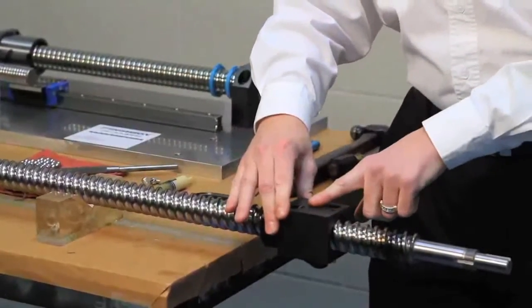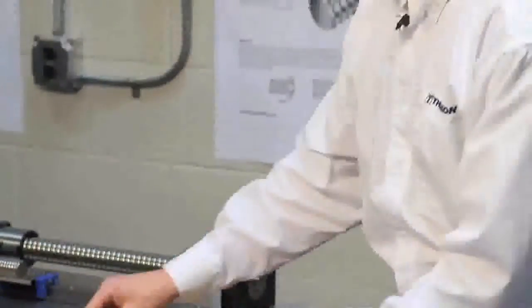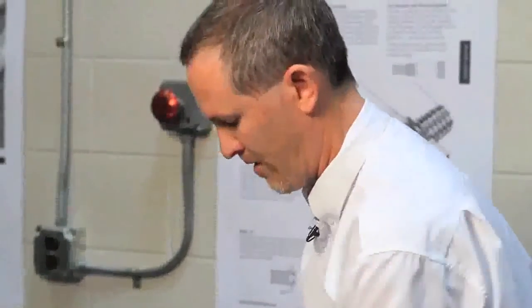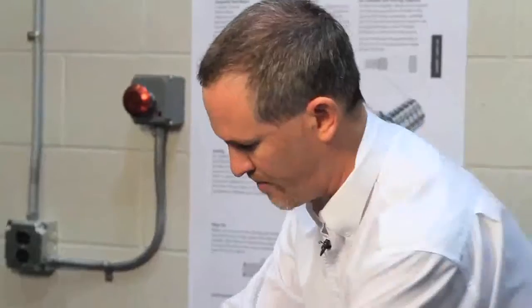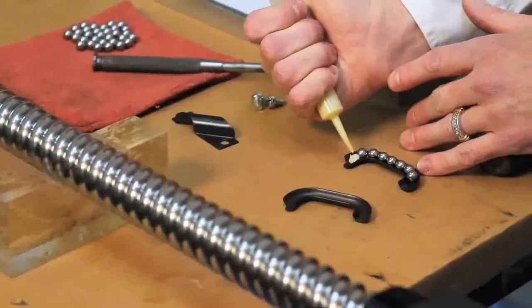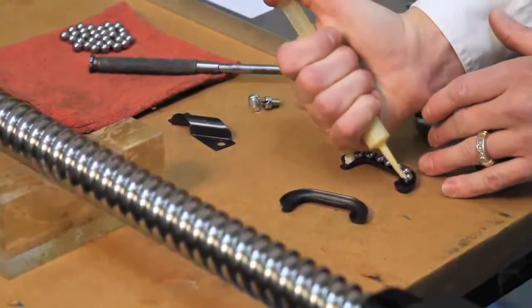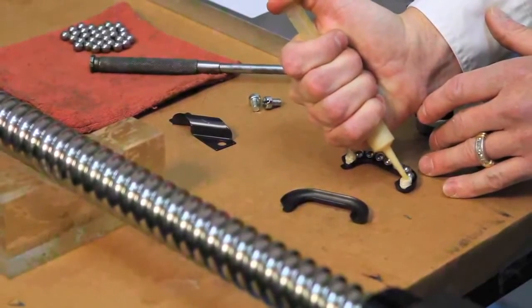Once I get the ball bearings into the circulation path on the screw, we'll have some extra ball bearings here. What we want to do is load them onto the return tube that we had taken out. We want to take some grease and capture the balls in the return tube.